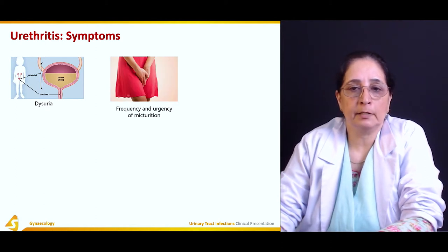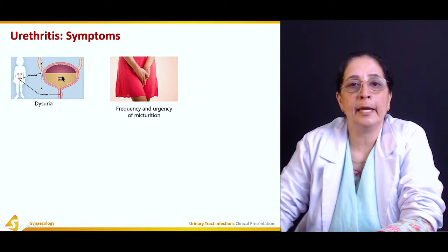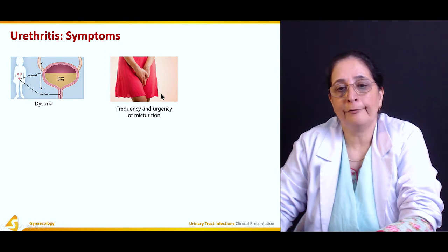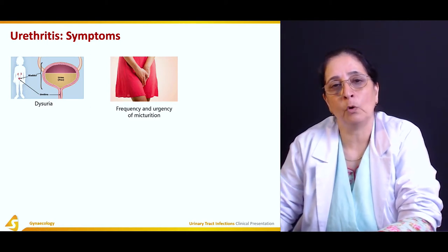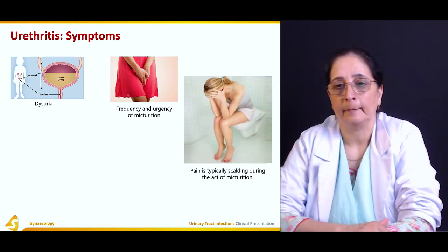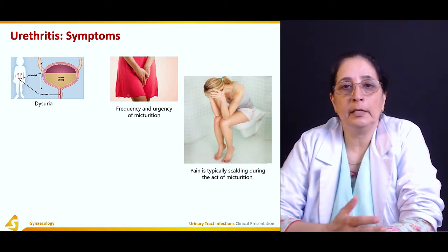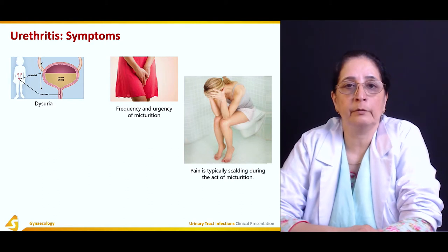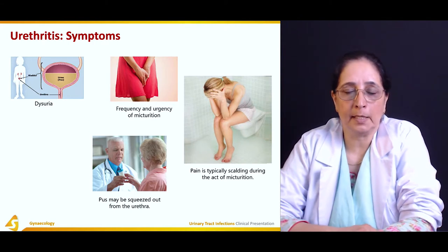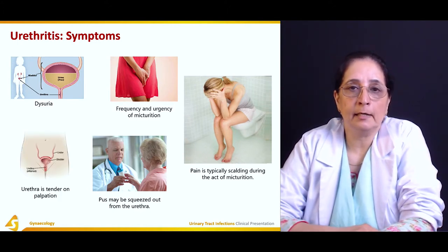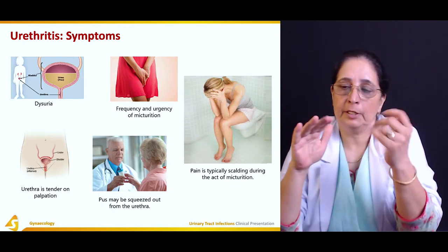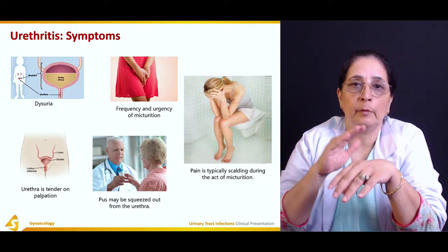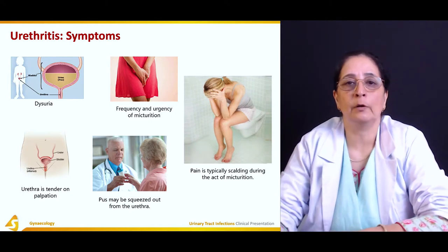Symptoms of urethritis: first is dysuria, which is painful urination or pain during urination. There is also frequency and urgency of micturition — the patient frequently wants to urinate and feels urgency. There is pain during the act of micturition. Pus is also present and is sometimes squeezed out of the urethra. There is also tenderness on palpation — when pressing on the lower abdomen, the patient has tenderness.